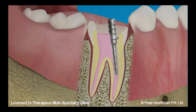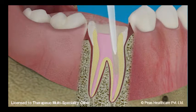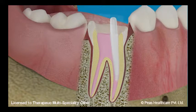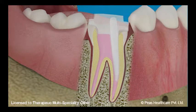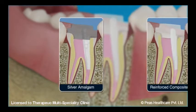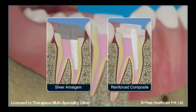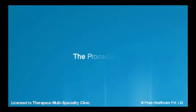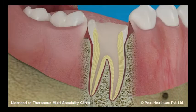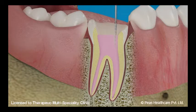The metal post is either cemented or screwed into the canal, whereas the fiber post is bonded with the root canal and acts as a monoblock with the core material. The core buildup can be done using two different filling materials: silver amalgam and reinforced composite.